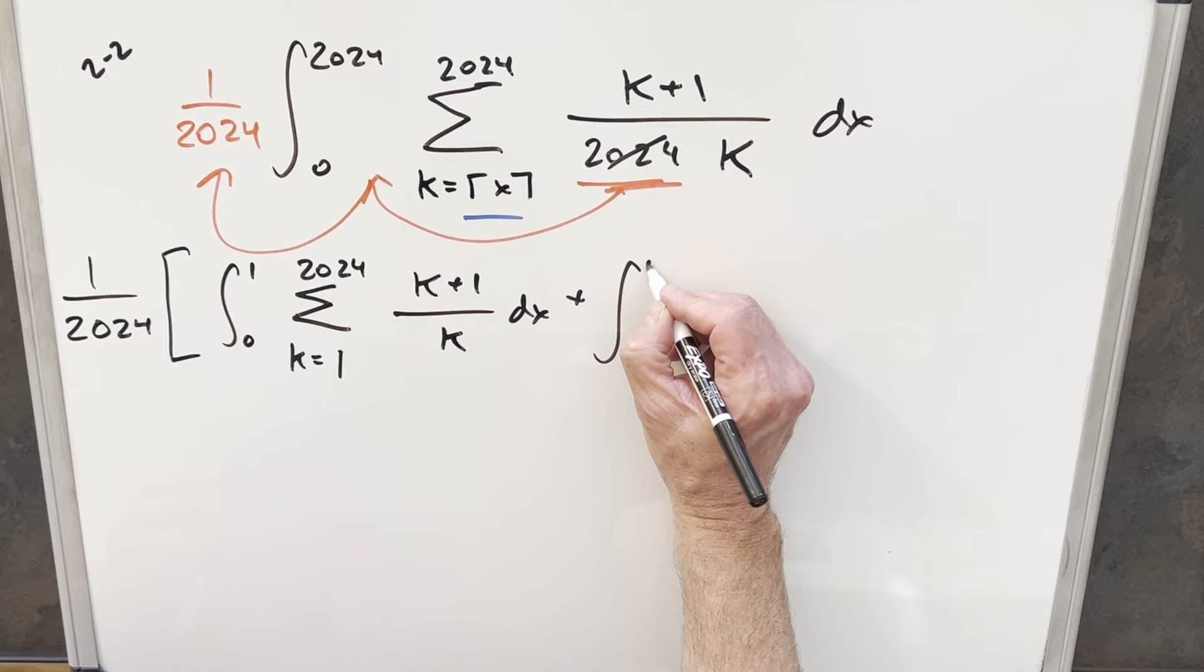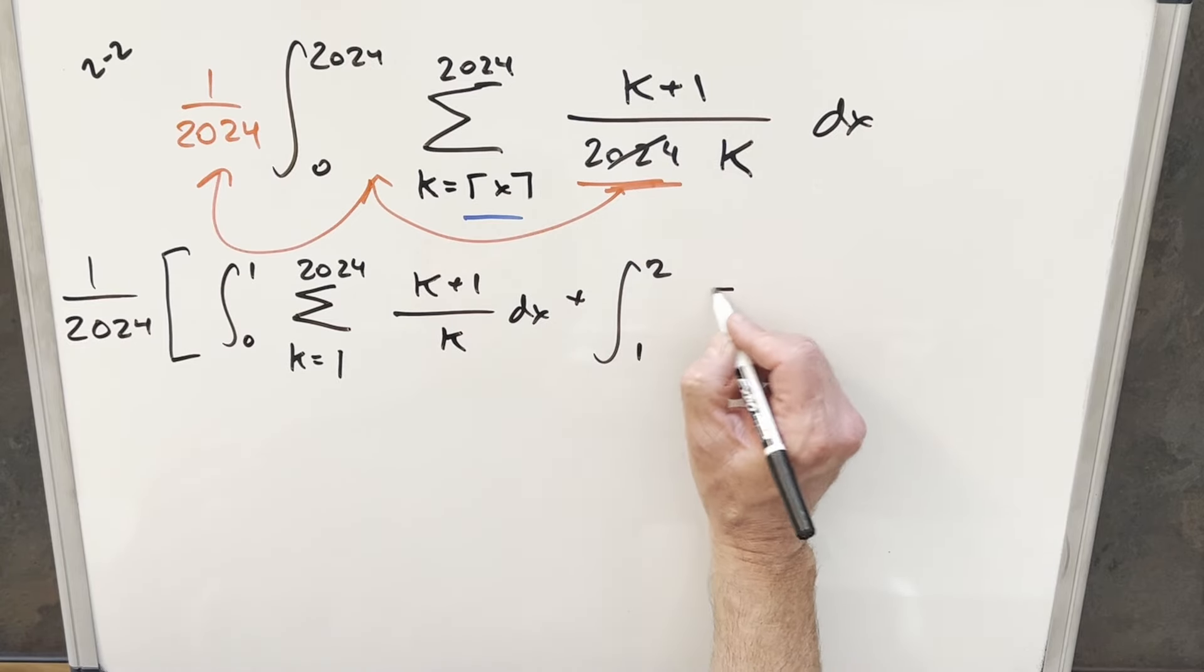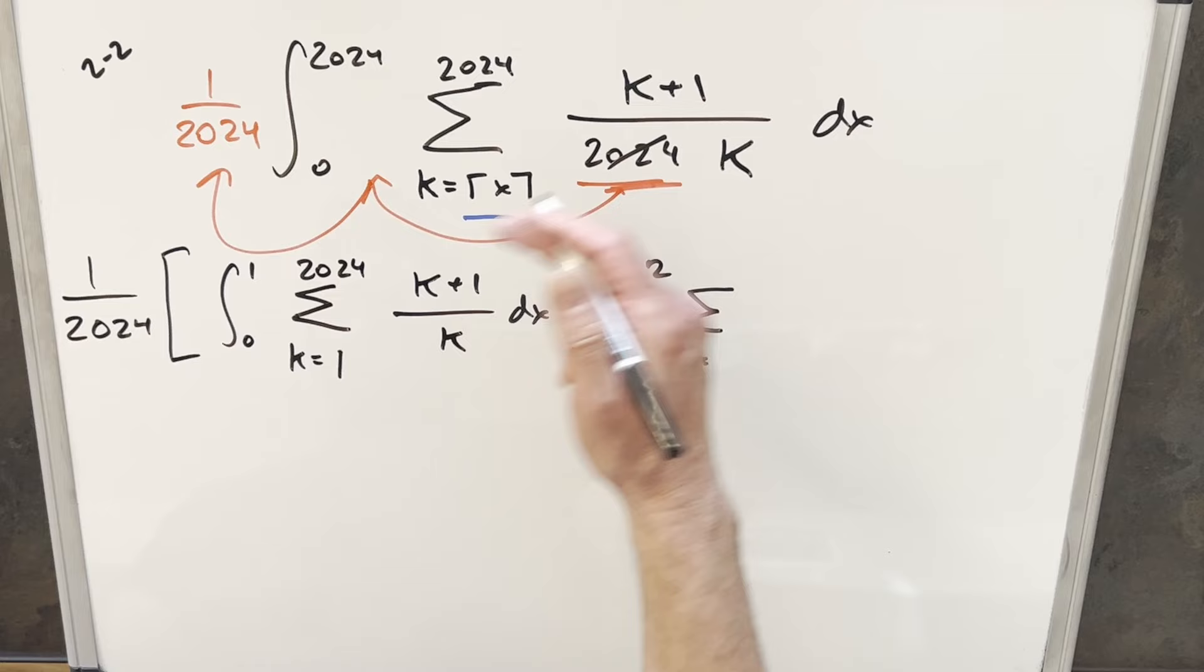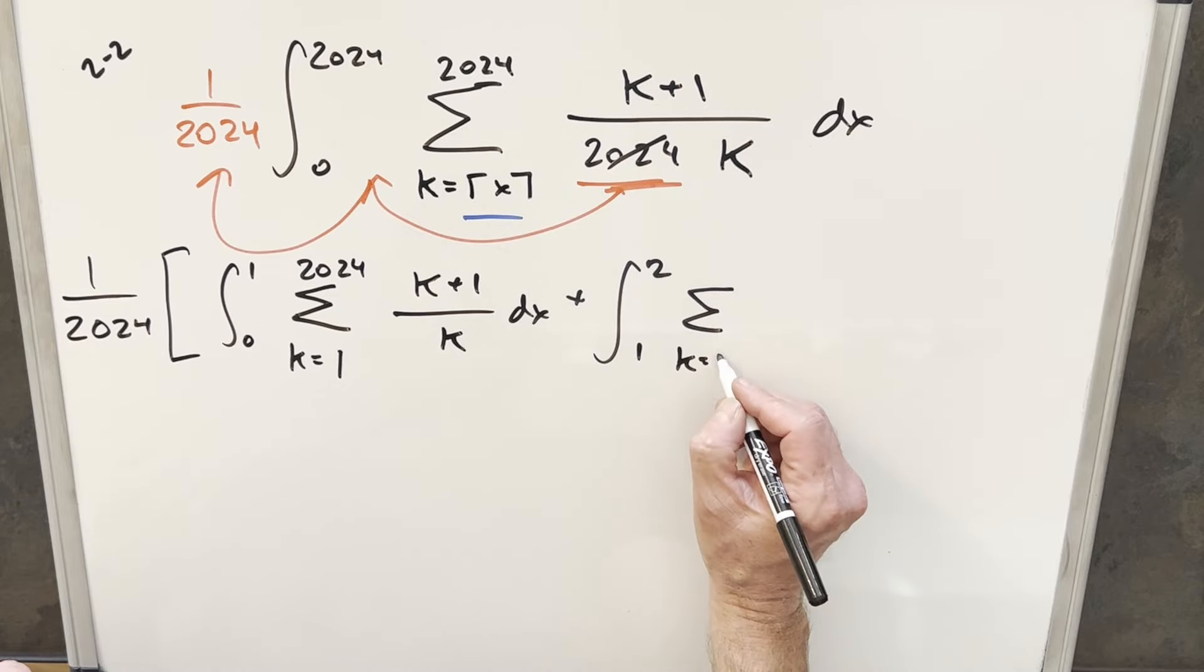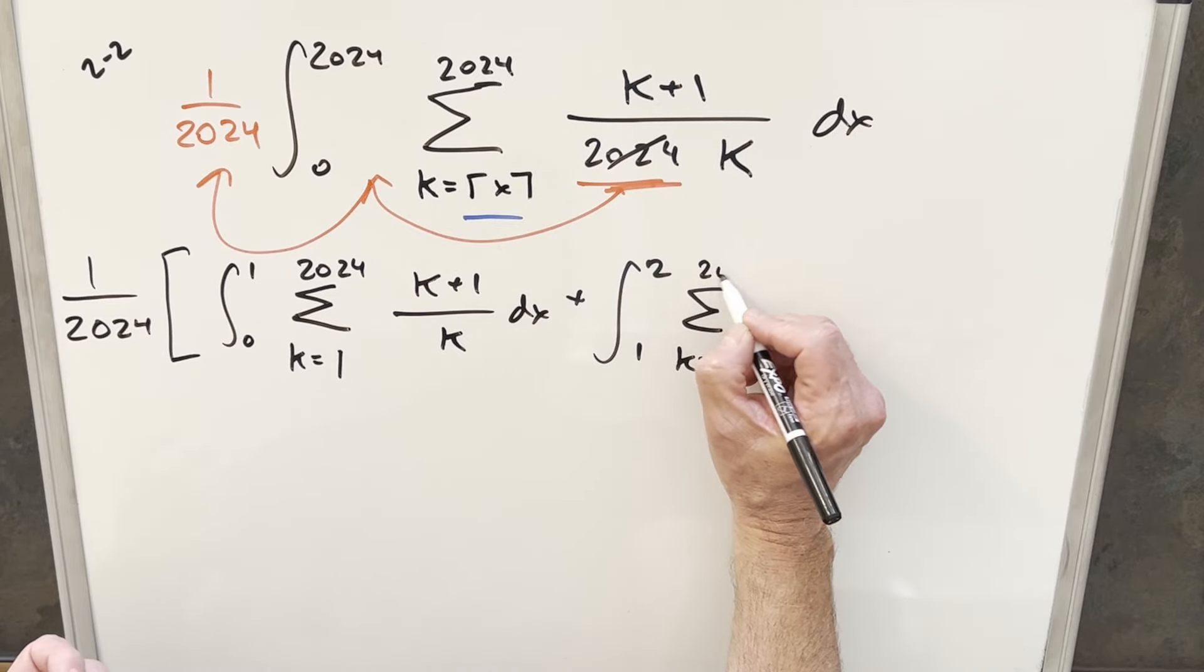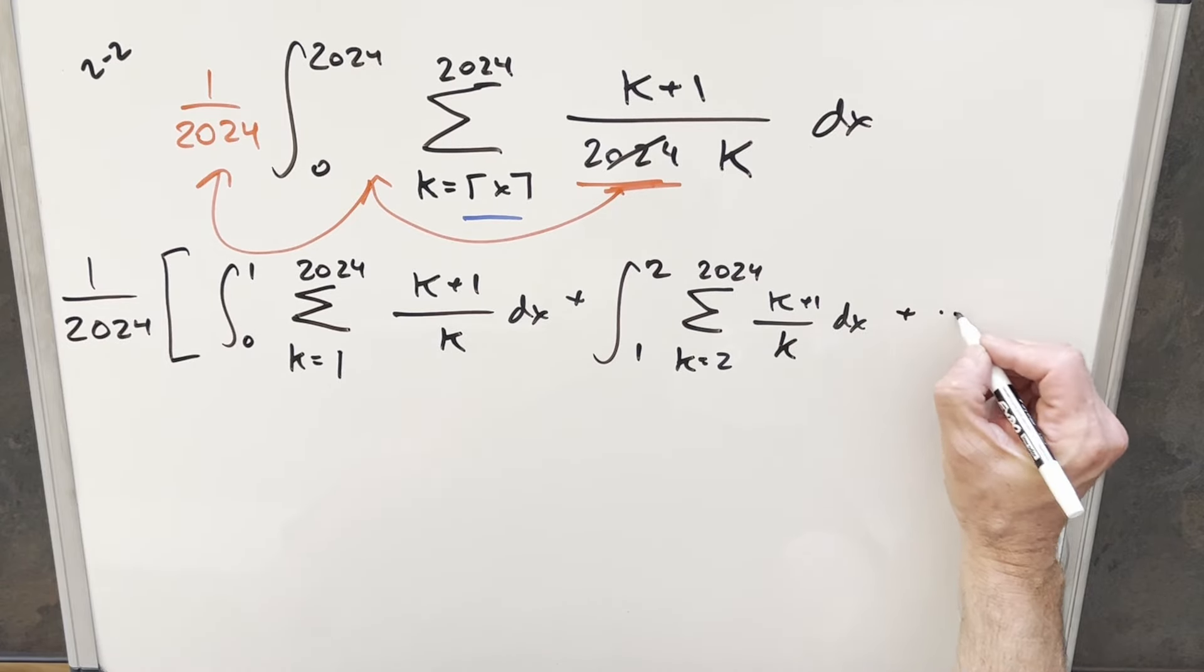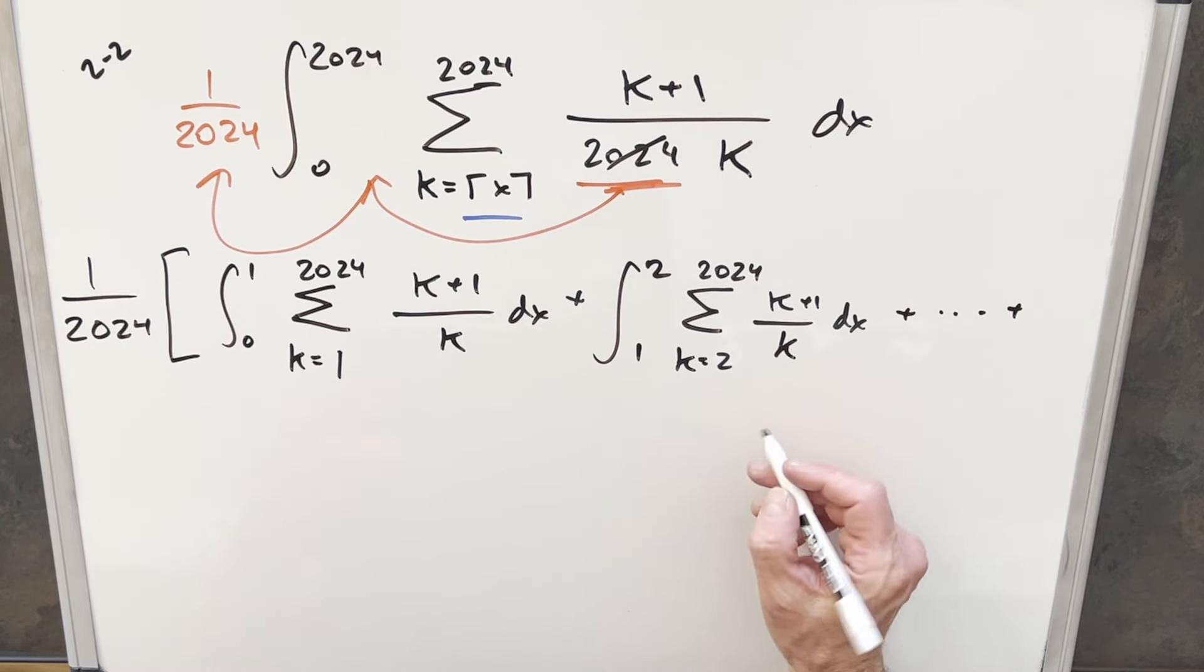And then for the next one, it's going to be really similar. Now we're going from one to two. And then this here, now for our k value, the ceiling function is going to round us up to this upper bound. So this value is going to be two here. So we're going from two to 2024. And this is about enough writing, but let's do the very last one.